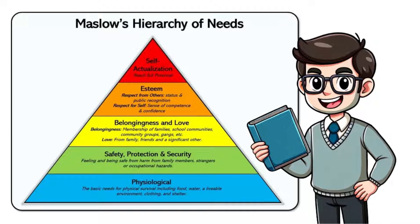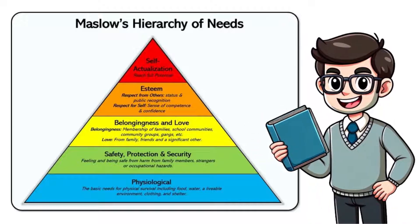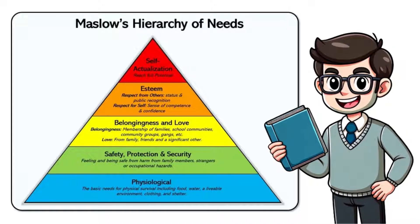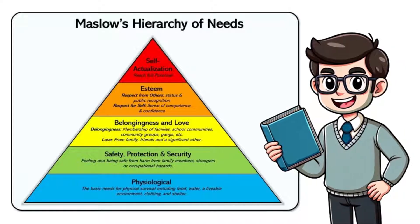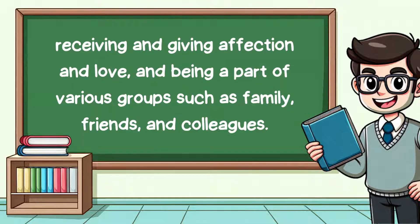The third level on Maslow's hierarchy is love and belongingness needs. Humans have an inherent desire for interpersonal relationships and a sense of belonging. This level emphasizes the importance of friendship, intimacy, trust and acceptance, receiving and giving affection and love, and being a part of various groups such as family, friends and colleagues.